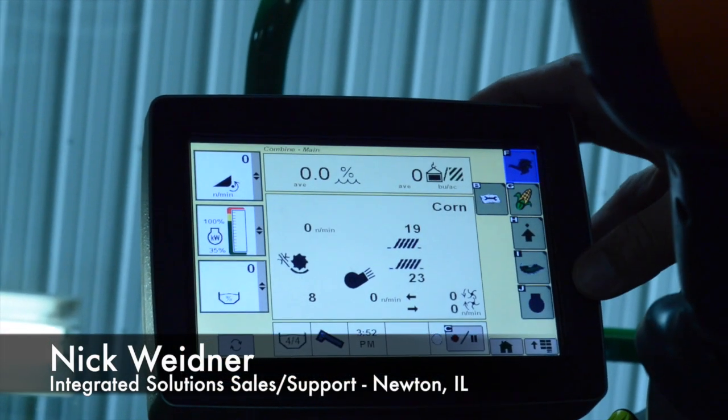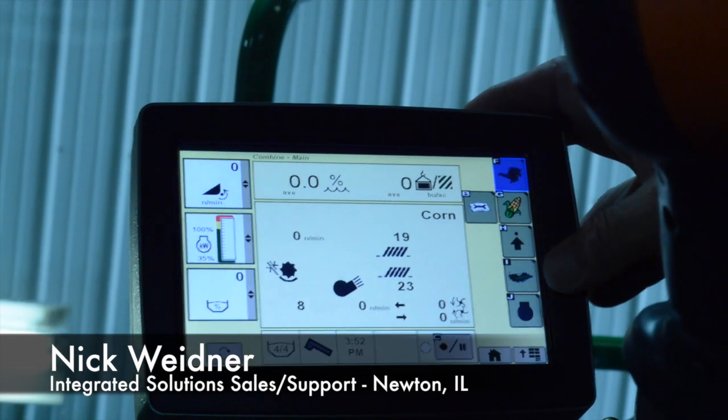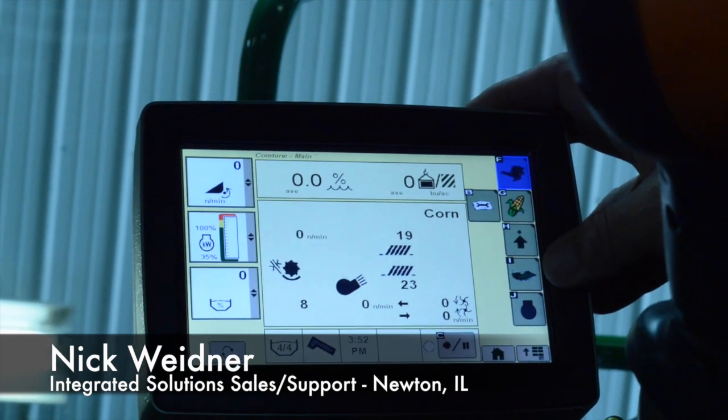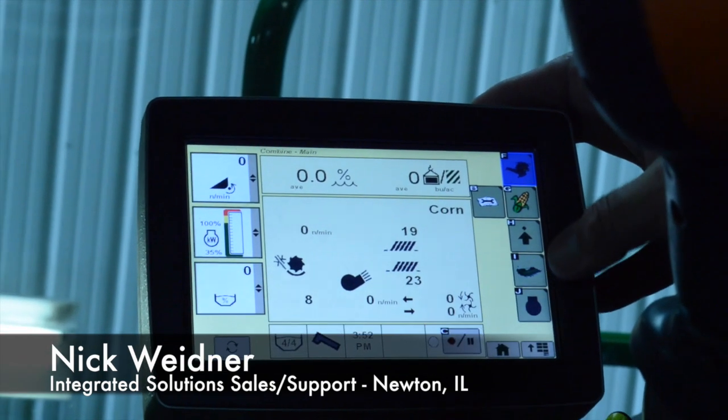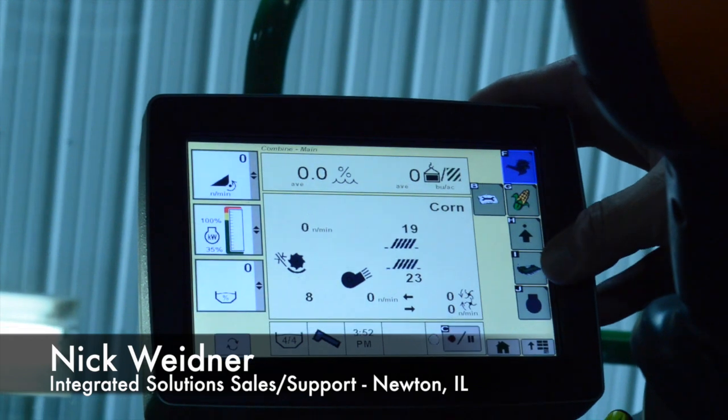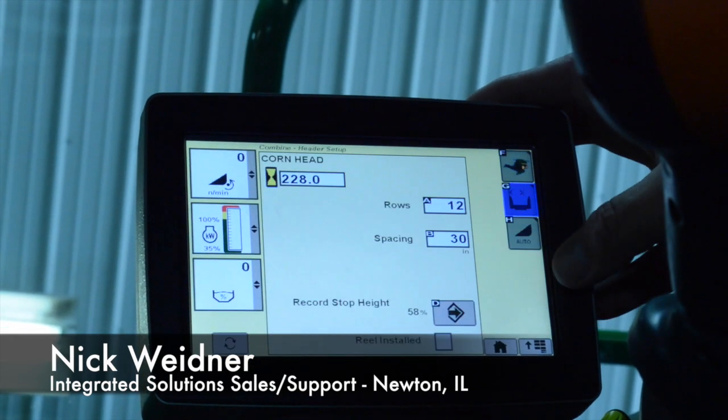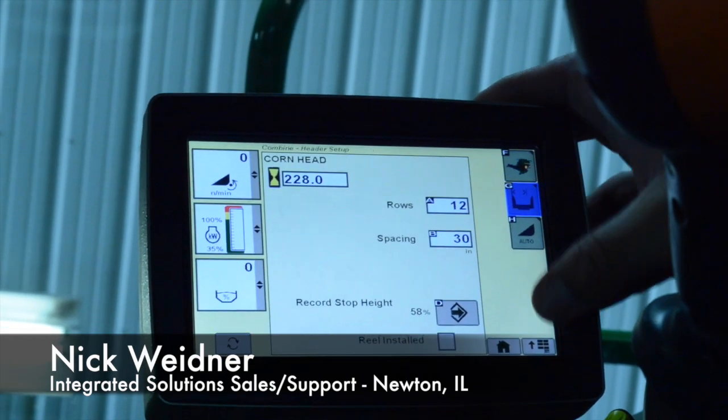So what we're going to go through here today are your automatic header settings to get it set up for the correct height for the automatic header. We're going to start by going to letter I, which is the picture of the corn head, and we are working with the corn head here today.